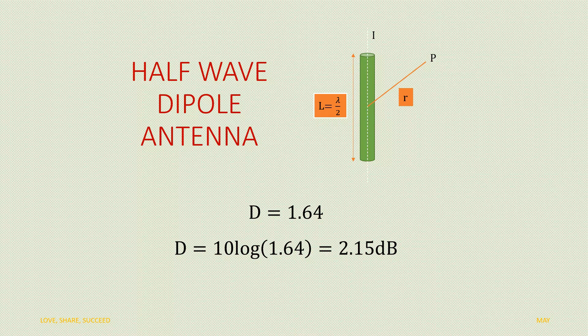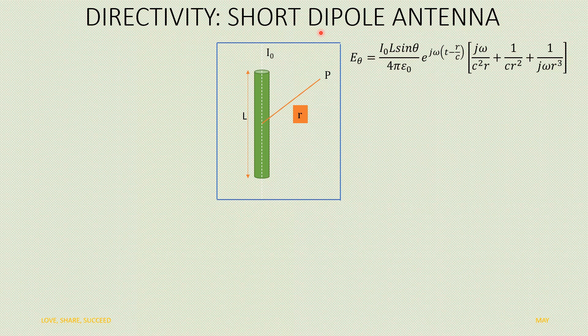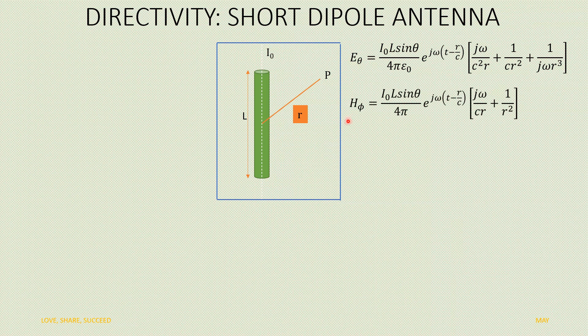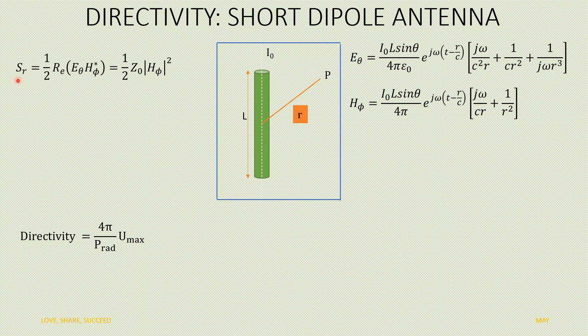The same procedure can be repeated for computing the directivity of a short dipole antenna. We must know the electric field and magnetic field terms and compute directivity as 4*pi by P_rad into U_max. First, let's compute the radiation density of the short dipole antenna, which is half the real part of E_theta * H_phi conjugate, also equal to half * Z0 * |H_phi|².